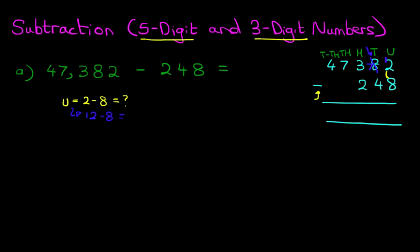So therefore the units column has now become twelve minus eight. Twelve minus eight is four. Now we're going to do the tens. We've got seven minus four. Seven minus four is three. The hundreds column we've got three minus two. The answer is one.